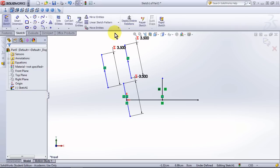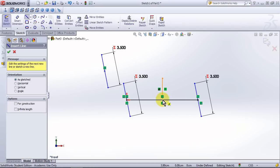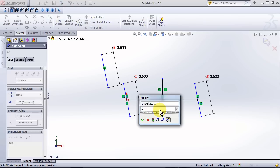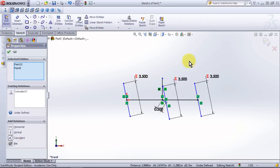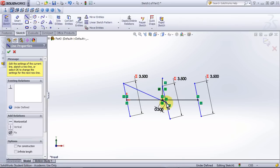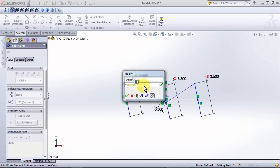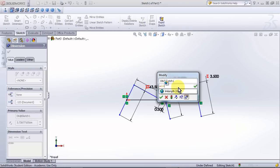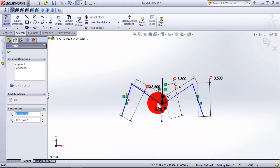Note the use of the add relations tool, making things fixed, constraining them with dimensions, and the use of equations and global variables. Also, for the love of hexapods, don't be fooled by this blue sketch, and make sure all your lines are black rather than blue, meaning they are fully defined, in your real SOLIDWORKS parts.